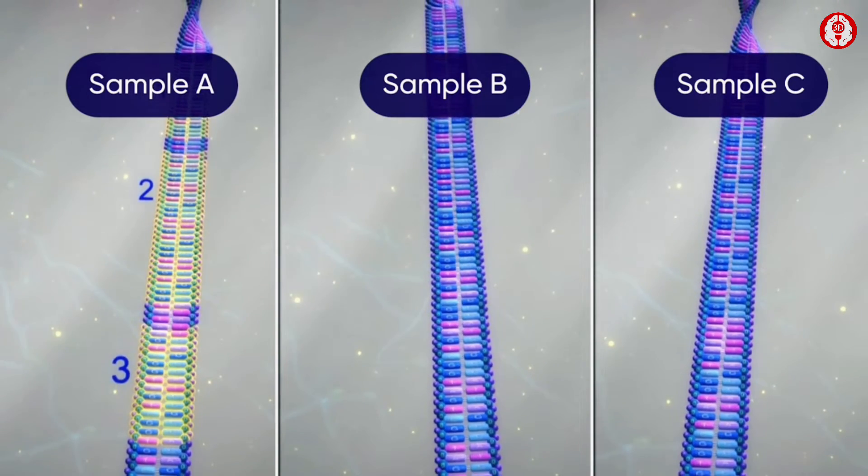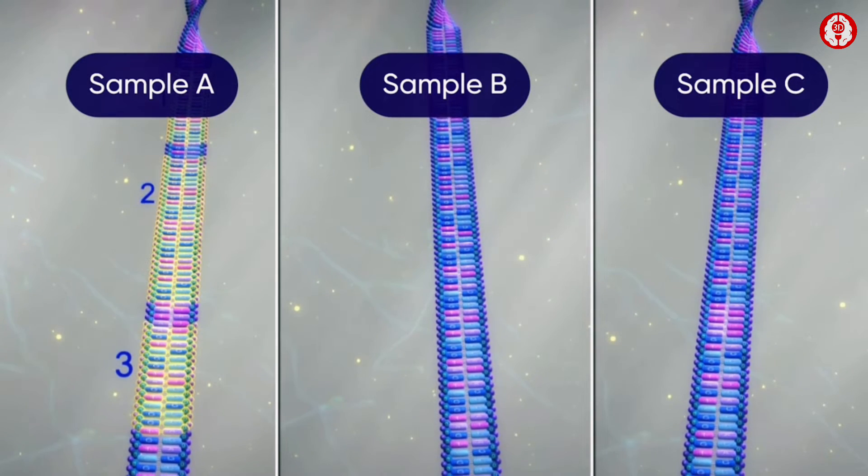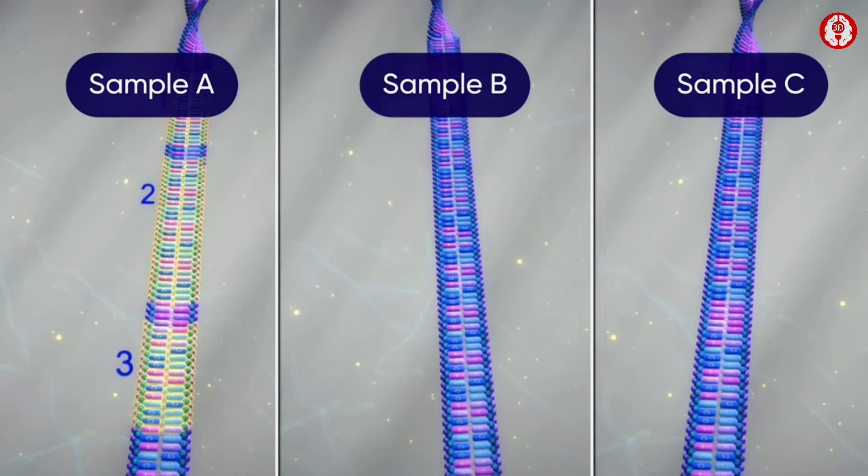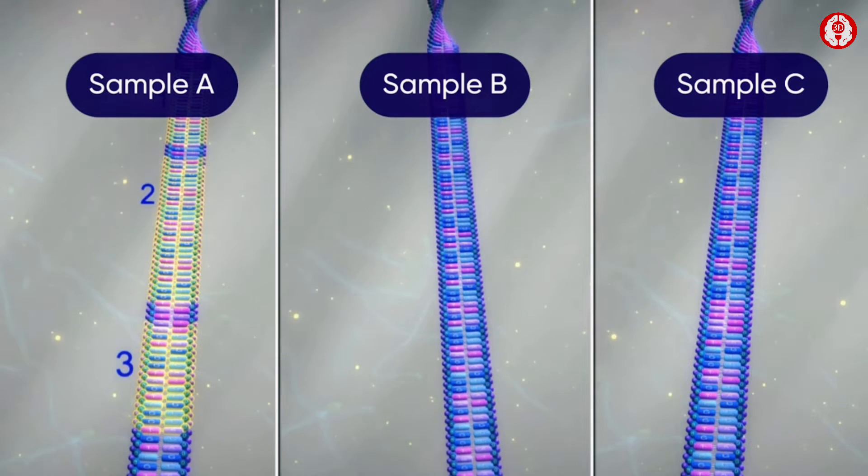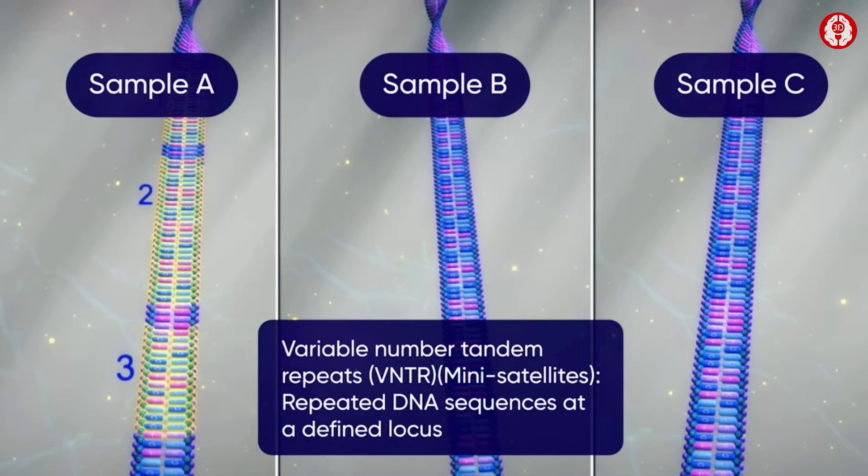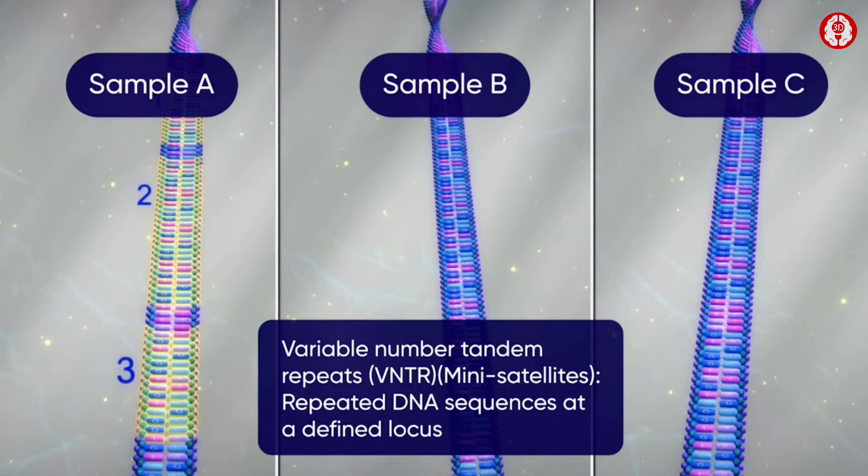the three highlighted parts are repeats of A, G, T, C, G, G, T in sample A. They are called VNTRs, also known as mini-satellites.